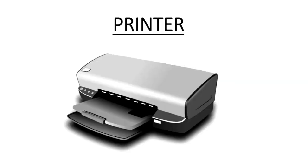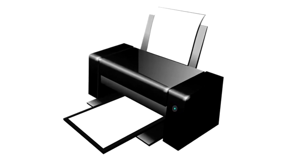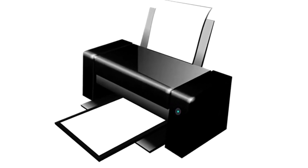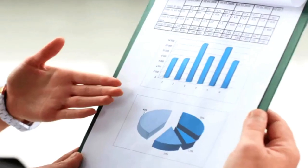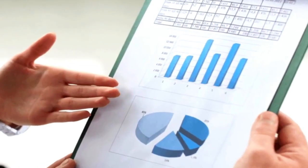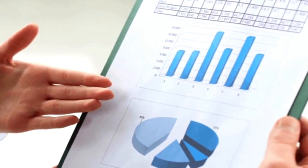Printer. A printer is used to print text or pictures on paper. It can print both in black and white or color. The printed copy on paper is called the hard copy.